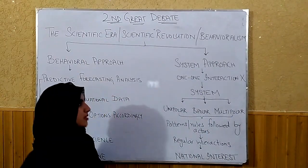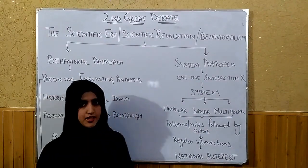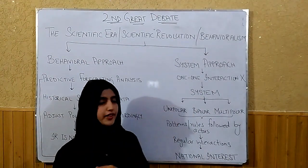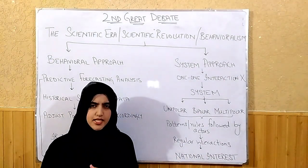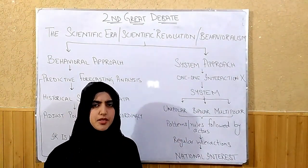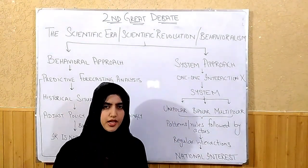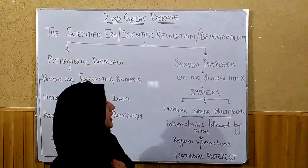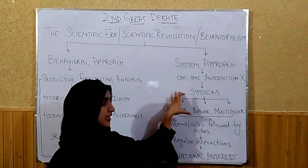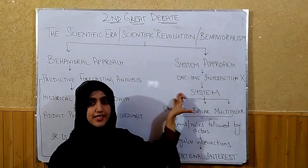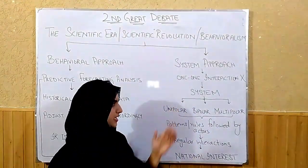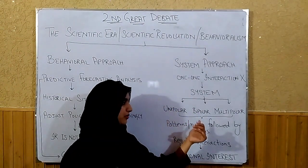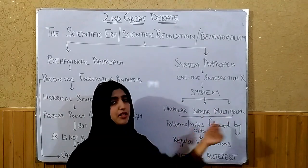Now regarding the system approach: states or individuals are not in simple one-to-one interactions. In international society, there always exists a system. What can this system be? It can be unipolar, bipolar, or multipolar.